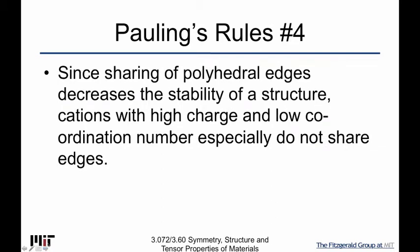Pauling's rule number 4: since sharing of edges decreases stability, cations that have a high charge and a low coordination number definitely do not want to share edges. With a very high cation charge, sharing edges brings two high-Q cations closer together, and without a high coordination number, there's not much shielding either. So this makes perfect sense.